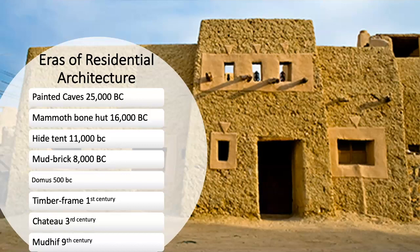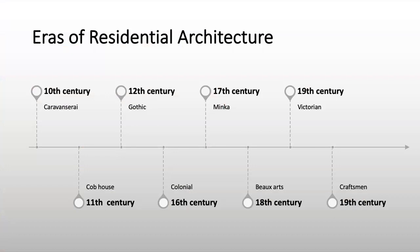The areas of residential architecture are: painted caves from 25,000 BC, mammoth bone huts 16,000 BC, hide tent 11,000 BC, mud brick 8,000 BC, domus 500 BC, timber frame first century, chateau third century, mudhiff 9th century, caravansari 10th century, cob houses 11th century, gothic 12th century, colonial 16th century, Minka 17th century, beaux arts 18th century, Victorian 19th century, and craftsmen also in the 19th century.